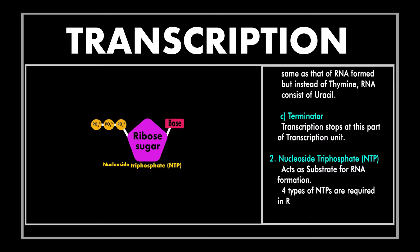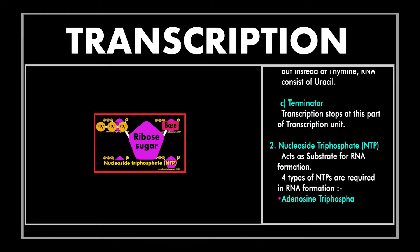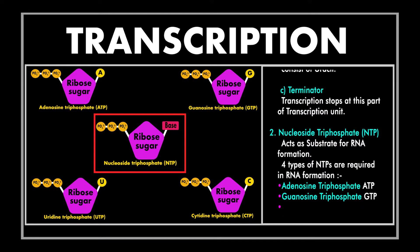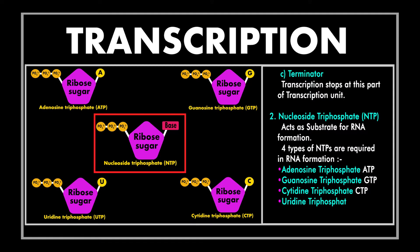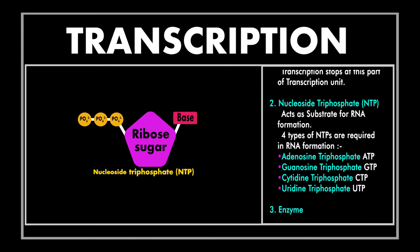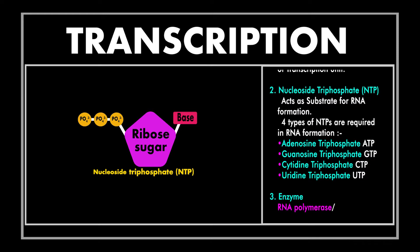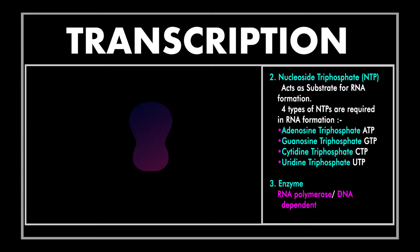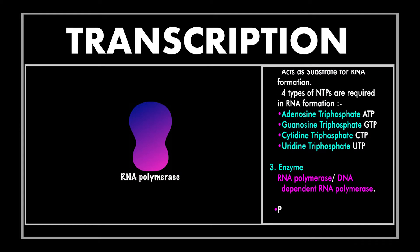The next requirement is nucleotide triphosphates or NTPs. These NTPs are of four types depending on the nitrogenous base attached: adenosine triphosphate (ATP), guanosine triphosphate (GTP), cytidine triphosphate (CTP), and uridine triphosphate (UTP). Other than acting as substrate for polymerization, these NTPs also provide the energy for polymerization by breaking off the high energy bonds between two phosphate groups.